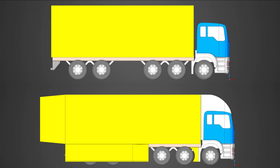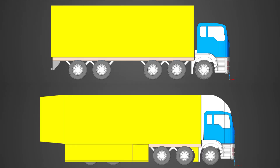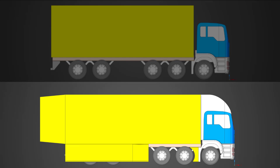The objective of this demonstration is to understand the effect of streamlining on drag. To do this, we're going to take a look at two different versions of the same truck design. The first version is a traditional truck design which we can see on top. On the bottom, we have a more modernized version which has been streamlined to reduce aerodynamic drag.